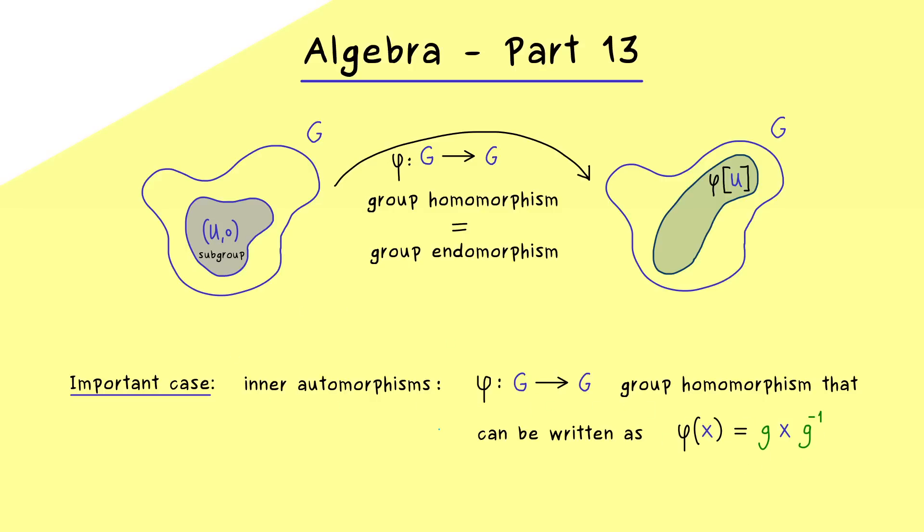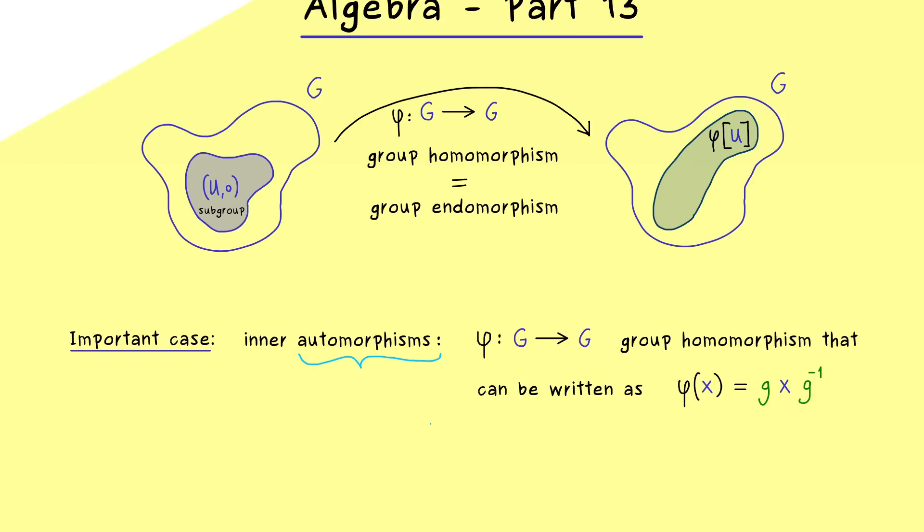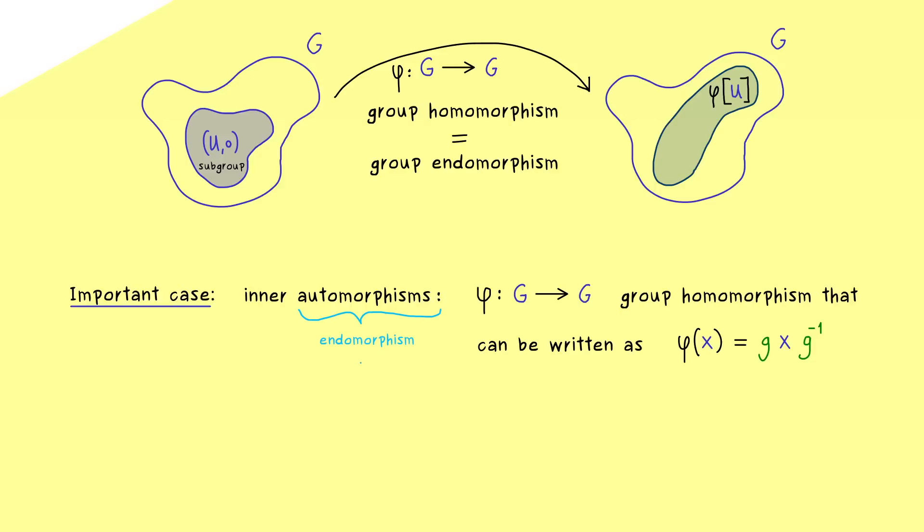And at this point I can also tell you that automorphism is just a special name that is used for a particular endomorphism. More concretely it's an endomorphism that is also an isomorphism.